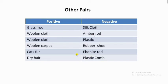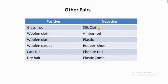There are other pairs of objects which get charged when rubbed with each other. These include: woolen cloth and amber rod, woolen cloth and plastic, wooden carpet, rubber shoe, cat's fur and ebonite rod, dry hair and plastic comb. We can remember this table by using the glass rod and silk cloth pair as a reference.